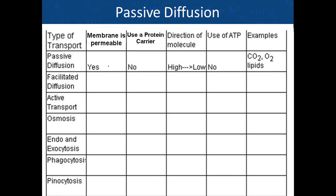In the case of passive diffusion: is the membrane permeable to the molecule? Yes. Did we need a protein carrier? No. The direction of movement was from higher concentration to lower concentration, or higher free energy to lower free energy. Did we need ATP? No. Examples of molecules that can cross the membrane this way include carbon dioxide, oxygen, and lipids.